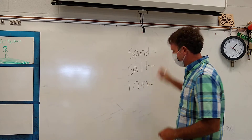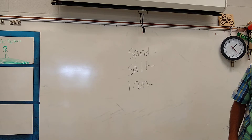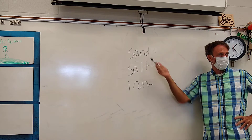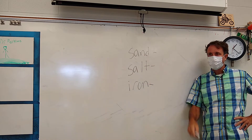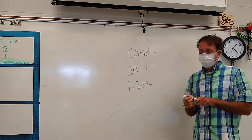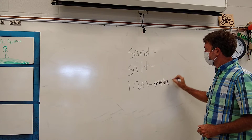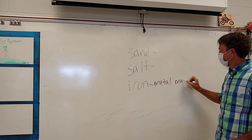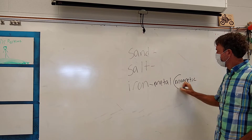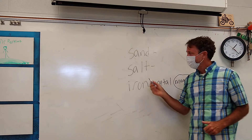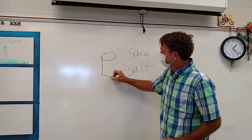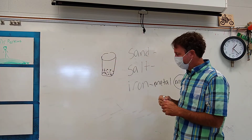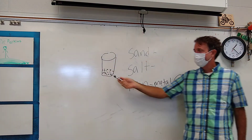These three things — sand, salt, and iron — are all very different. One of them stands out from the other two: iron. Because iron is a metal, and like a lot of metals, iron is magnetic. So if we have a mixture in a beaker with sand, salt, and iron all mixed up, we can use magnetism to remove the iron.